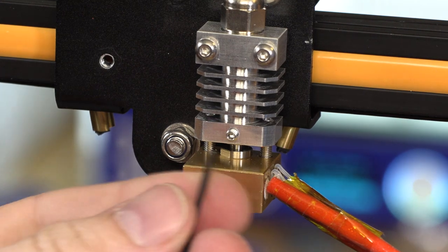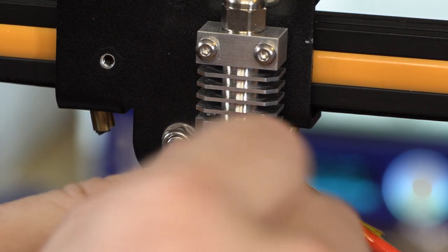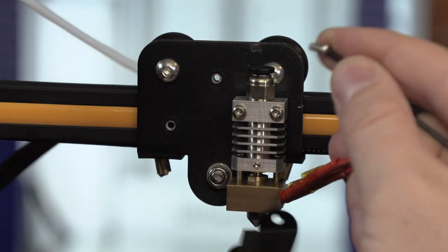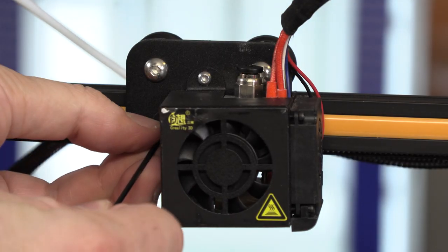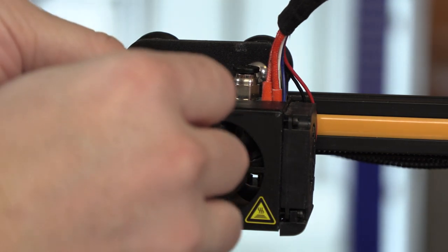Finally, once those are screwed in and tight, tighten the grub screw using your 1.5mm hex wrench. At this point, you're going to want to install the fan and fan shroud back into place. Find the two screws that holds it in place, find your 2mm hex wrench and tighten everything up.